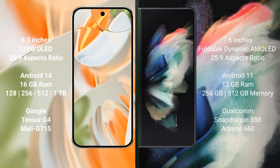Google Pixel 9 Pro comes with 16GB RAM and 256GB, 512GB, or 1TB internal storage, powered by the Google Tensor G4 processor with Mali G715 GPU. Samsung Galaxy Z Fold 3 comes with 12GB RAM and 256GB or 512GB internal storage, powered by the Qualcomm Snapdragon 888 processor with Adreno 660 GPU.